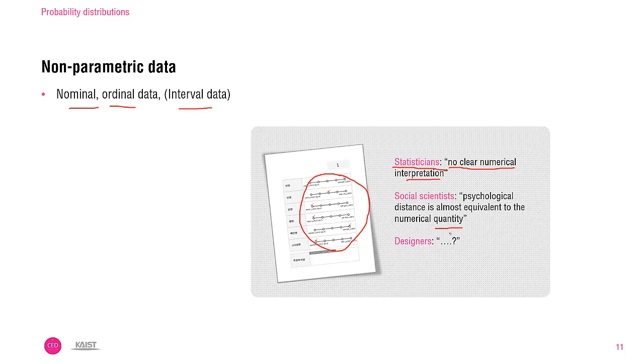However, when your paper is reviewed by more stringent scientists, they can insist that your interval data are non-parametric. Also, in design study, we even accept ordinal data as parametric. Therefore, depending on which discipline you are in or your target publication belongs to, the distinction of parametric or non-parametric can differ.